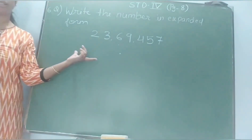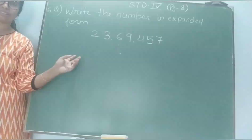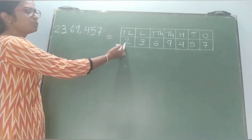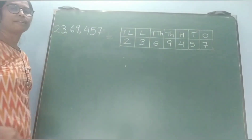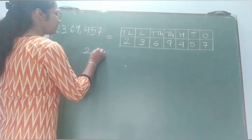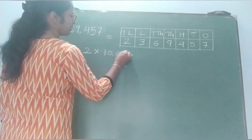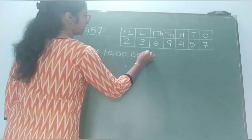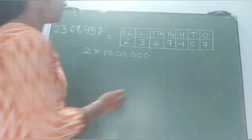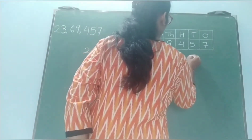Expanded form means the value of each digit. Now, 2 is in the 10 lakhs place, so 2 gets multiplied by 10 lakhs. So the value of 2 is 20 lakhs.